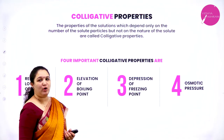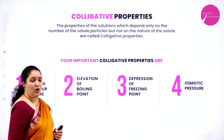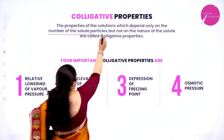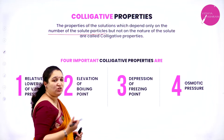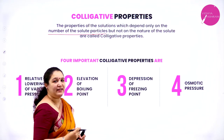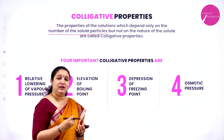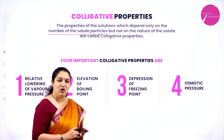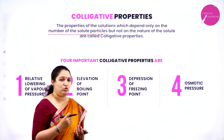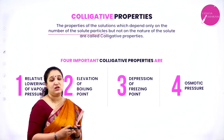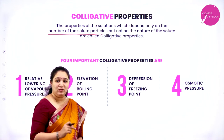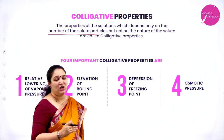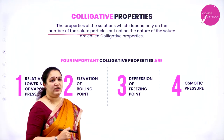What do you mean by colligative properties? The property of a solution which depends only on the number of solute particles, but not on the nature of the solute particle, is called a colligative property. The solute particles can be atoms, ions or molecules — that will not be considered. The only thing the property depends on is the number of solute particles.